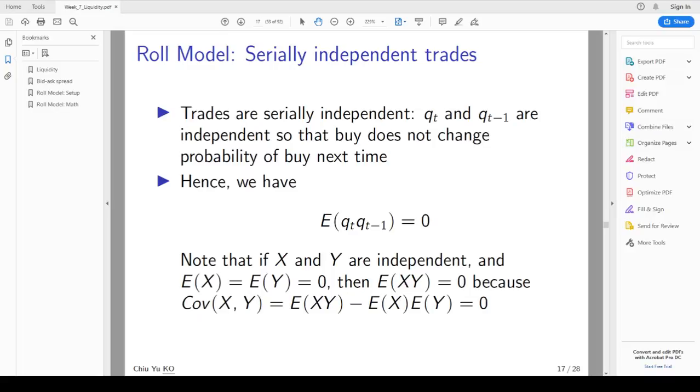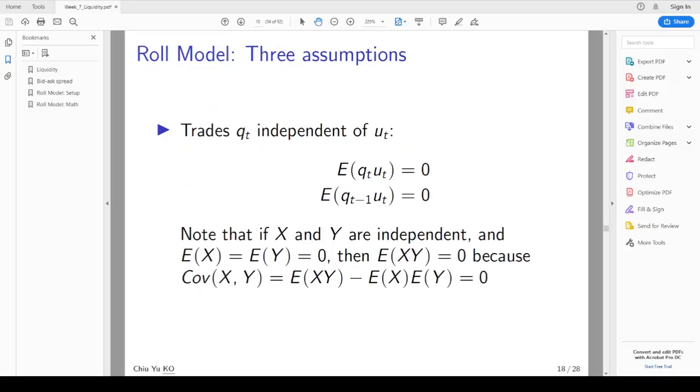You can rewrite covariance as two terms. The first term is expected value of the product minus the product of the expectations. Because the second term is 0, also the first term is 0. The last assumption we are going to make is trades are independent of the random term u_t. So we use the same concept and we can say Q_t and u_t the expected value is 0, and Q_{t-1} and u_t are also 0.